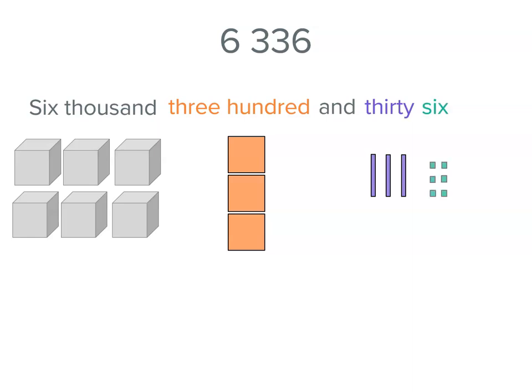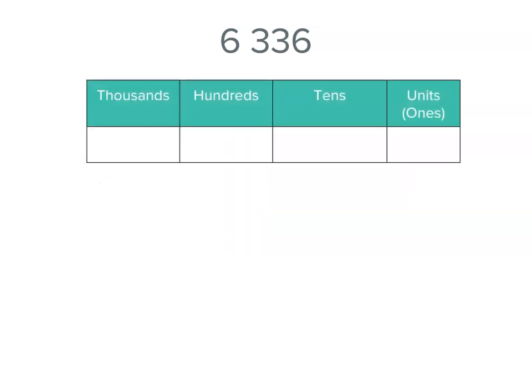So we've got our place value models there as well to help us. Now we could write it in a place value table: 6 thousands, 3 hundreds, 3 tens and 6 units or ones, which means we can partition our number or break it up because we've got 6,000 plus 300 plus 30 plus 6.